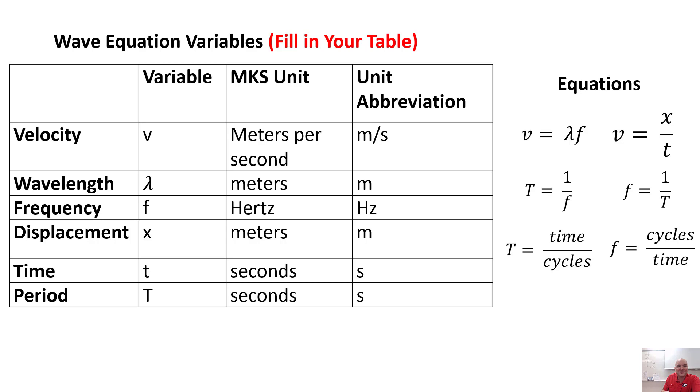First of all, we're just looking at some new variables. We've had velocity before, meters per second as a unit. We've got wavelength. This new symbol is a little upside down Y, and the unit's going to be meters. This is just going to be the length of a wave. Just think of it backwards, length wave.